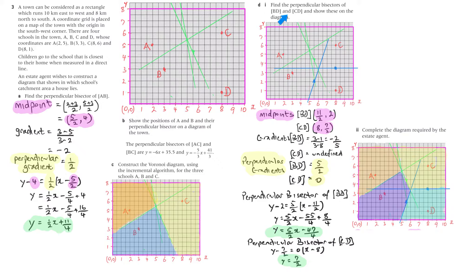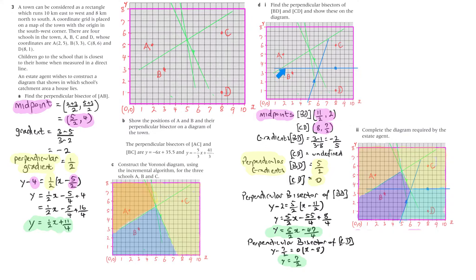D1: find the perpendicular bisectors of BD and CD. Now I've got BD and CD — the perpendicular bisectors of those — and these are the blue lines I've put in here. That's the perpendicular bisector for CD, which is just a horizontal line, and the one between B and D is this line here. These are the calculations for the equations of the two perpendicular bisectors, BD and CD.